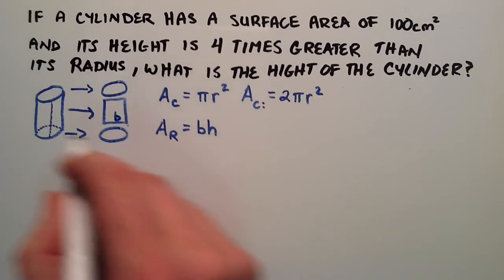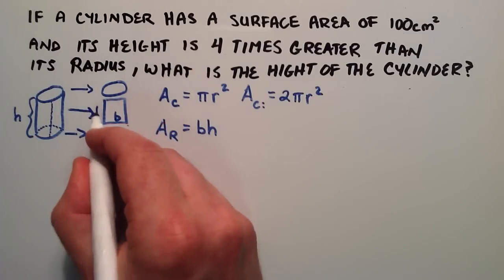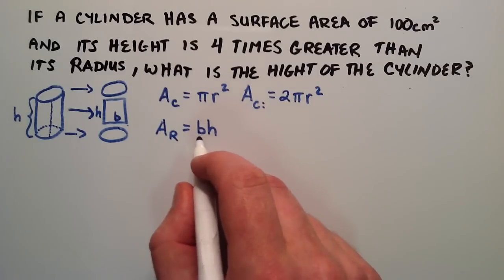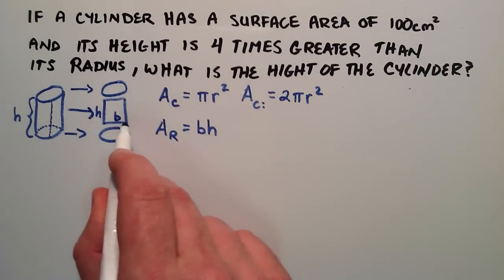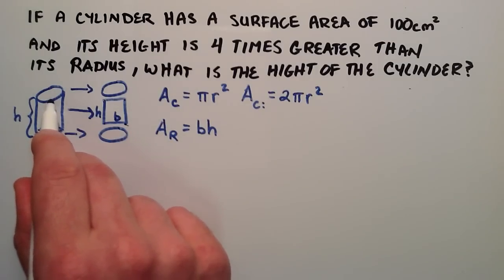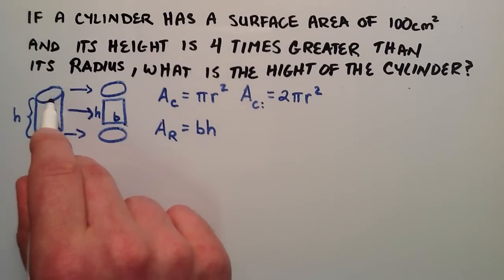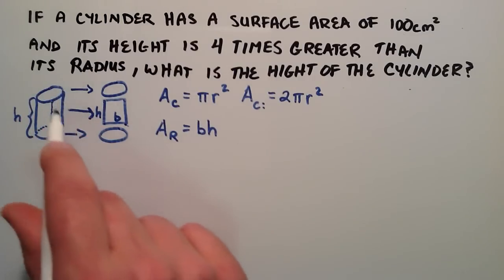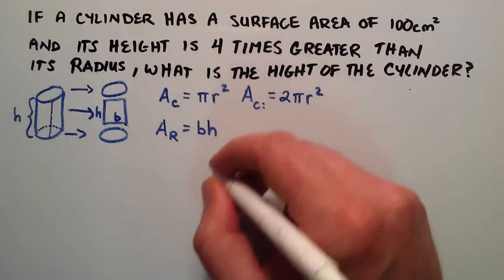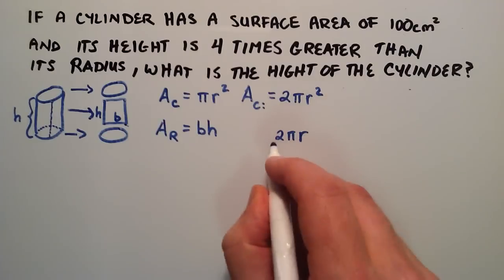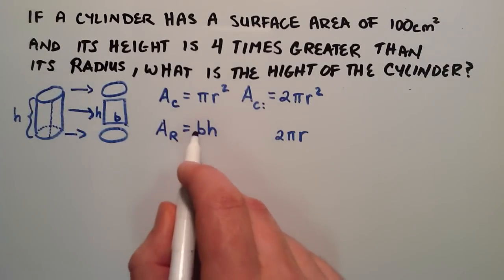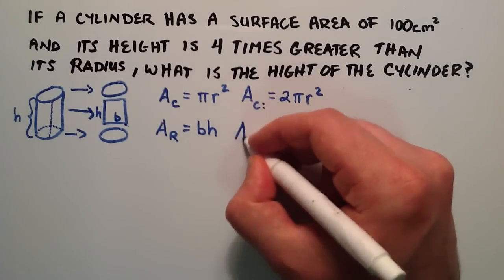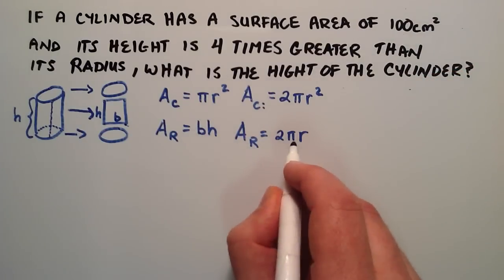The base of the rectangle is the distance all the way around one of the circles — starting at the cut and going all the way around to the other side. The distance around the outside of a circle, the perimeter, is 2πr. So the base of our rectangle equals 2πr, and the area of our rectangle is 2πr times h.